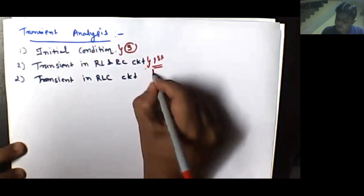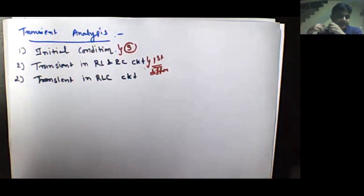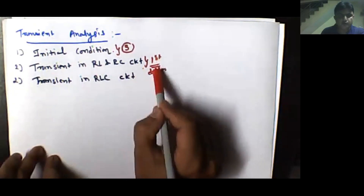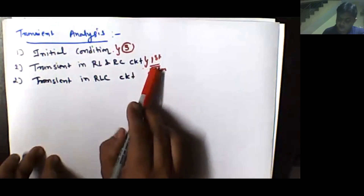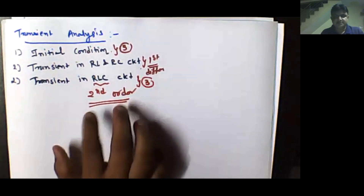Transient in RL and RC circuits is also known as your first order differential equation. We will solve the various parameters like the voltage across the capacitor, current flowing through the inductor, or any other node voltage. This will also require two to three lectures. Then after that we will discuss transient in RLC circuits. Whenever you have a series or parallel combination of RLC circuits, you encounter a second order differential equation. How to solve this type of example will be discussed in the next three lectures. So totally the plan covers the next 10 lectures.